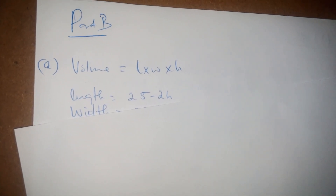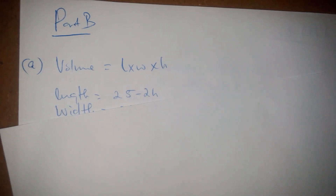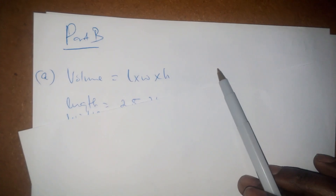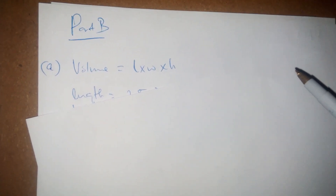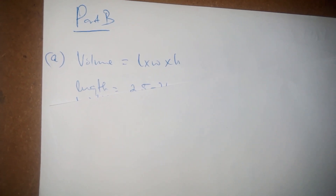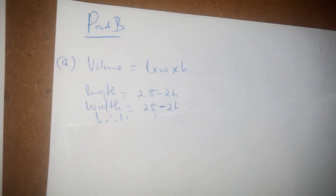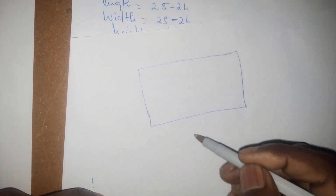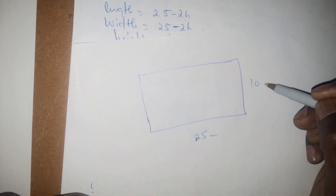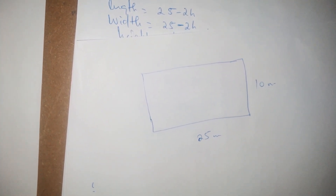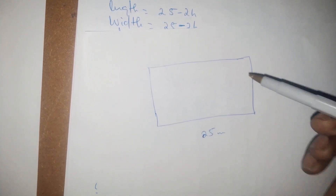For this part B, we want to calculate the height that will give us the maximum volume of the shade. We know that the formula for volume is length × width × height. We have to represent our length and width in terms of our height h so that we can differentiate and find the maximum. We were told the sunproof material is 25 meters in length and 10 meters in width.